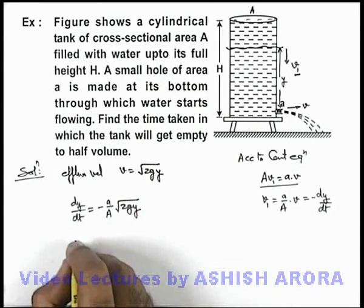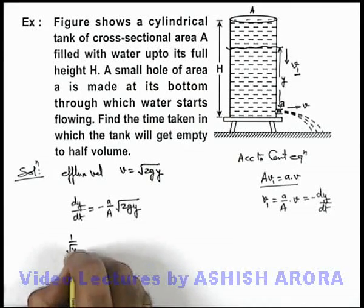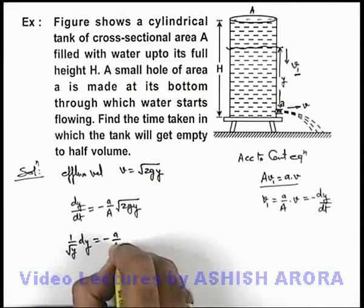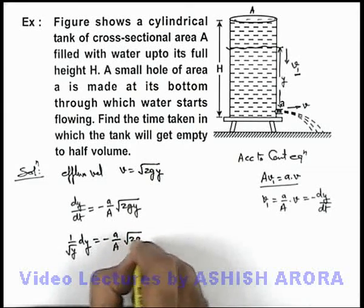If we just separate the variables, it is (1/√y)dy equals -(a/A)√(2g) dt.